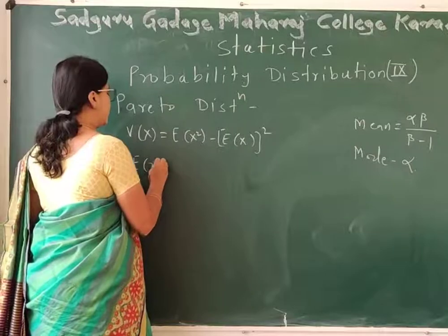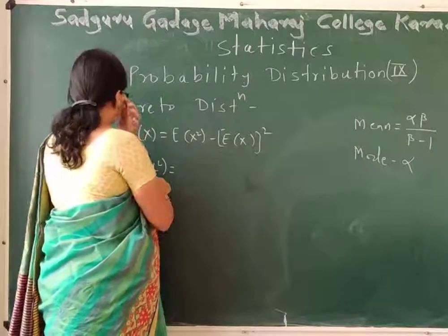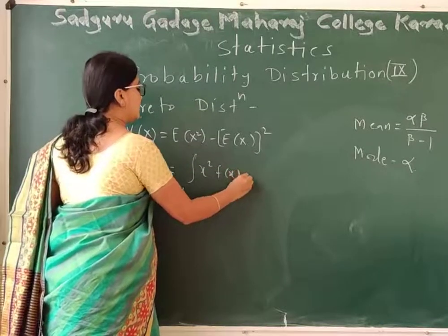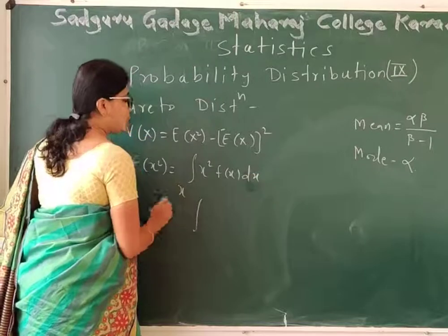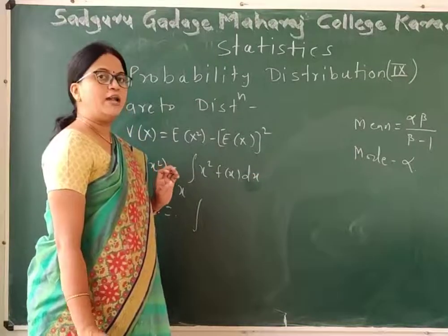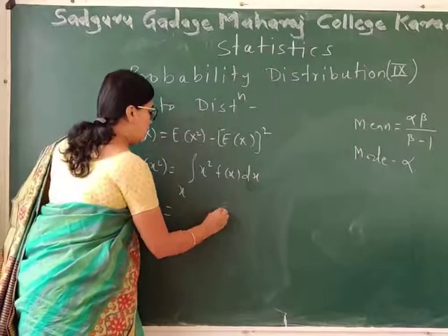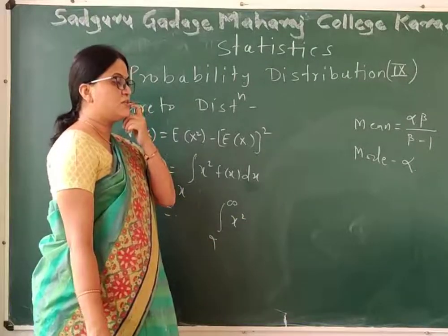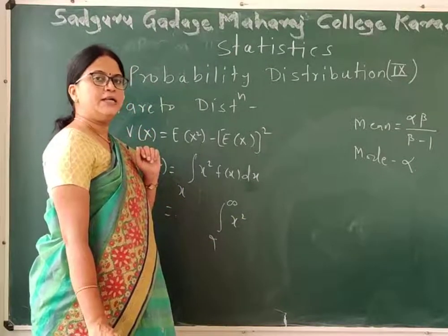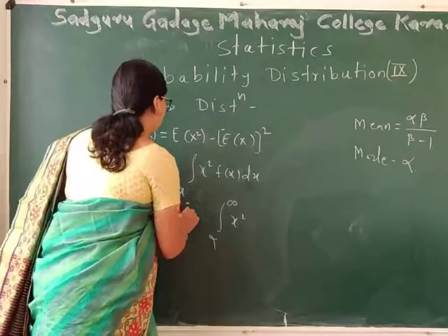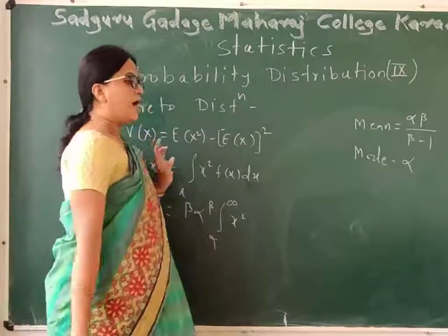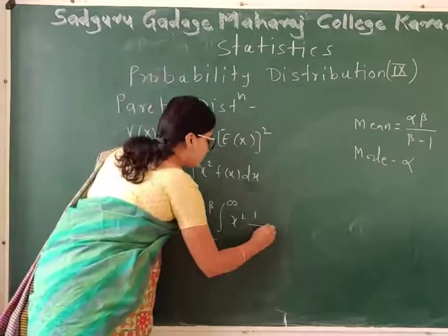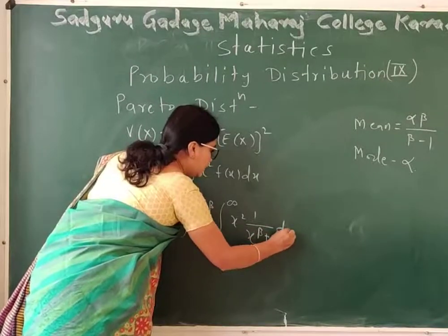Now, expectation of X squared. By using the formula, expectation of X squared is the integral over the range of X of x squared times f(x) dx. We replace the range as alpha to infinity, and in the integrand we have x squared multiplied by the constant term beta times alpha to the power beta, divided by x raised to beta plus 1, dx.